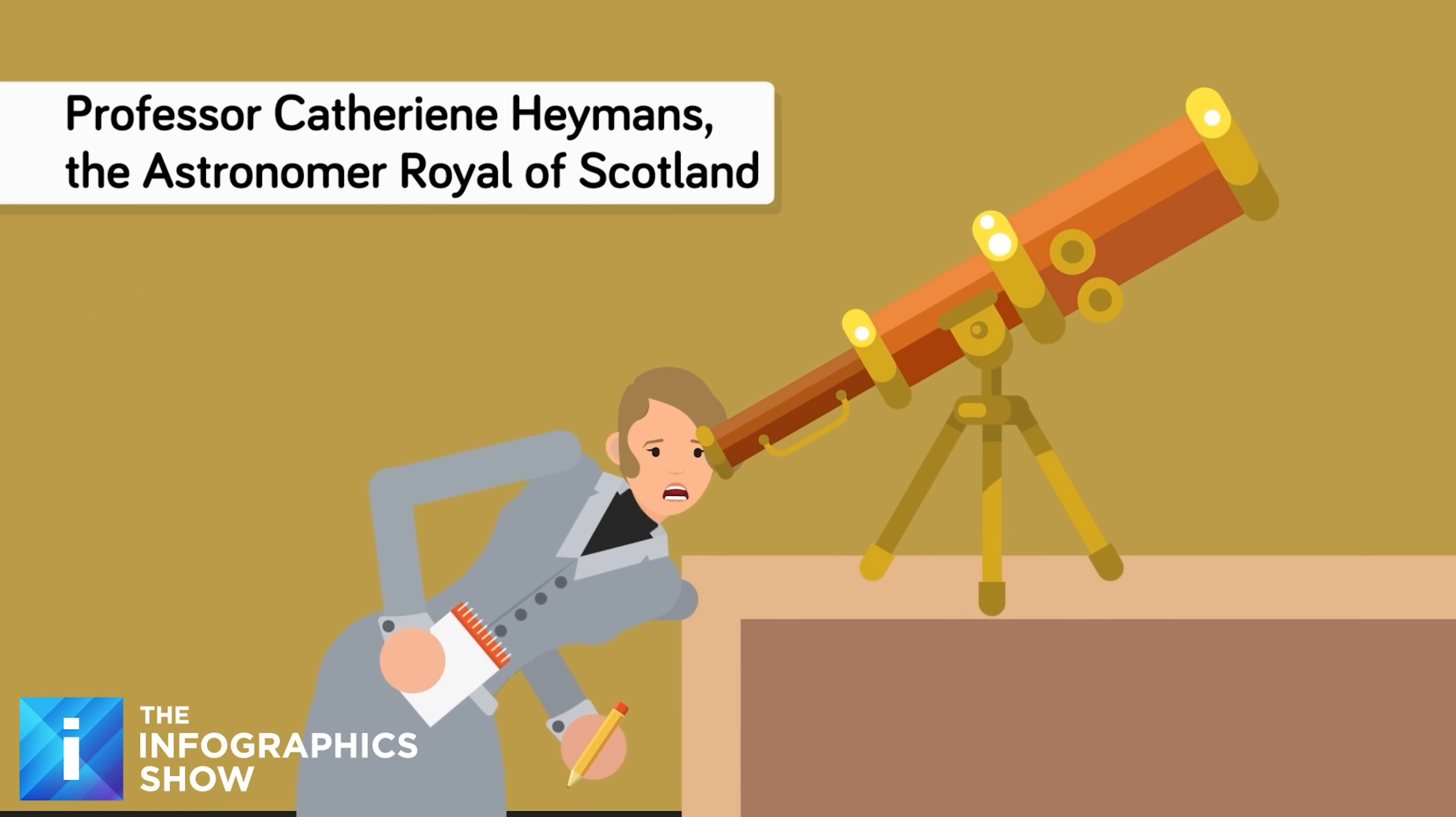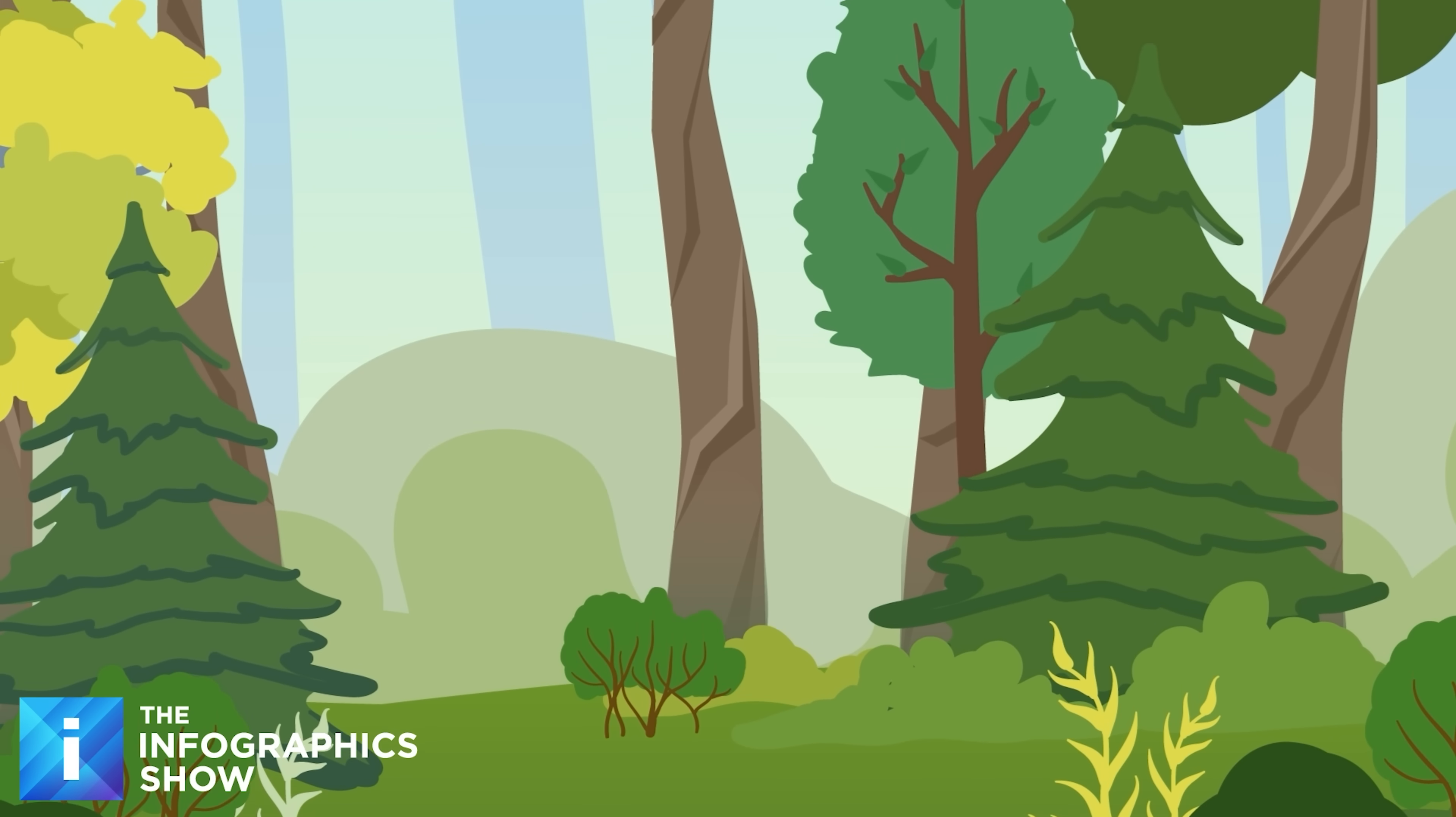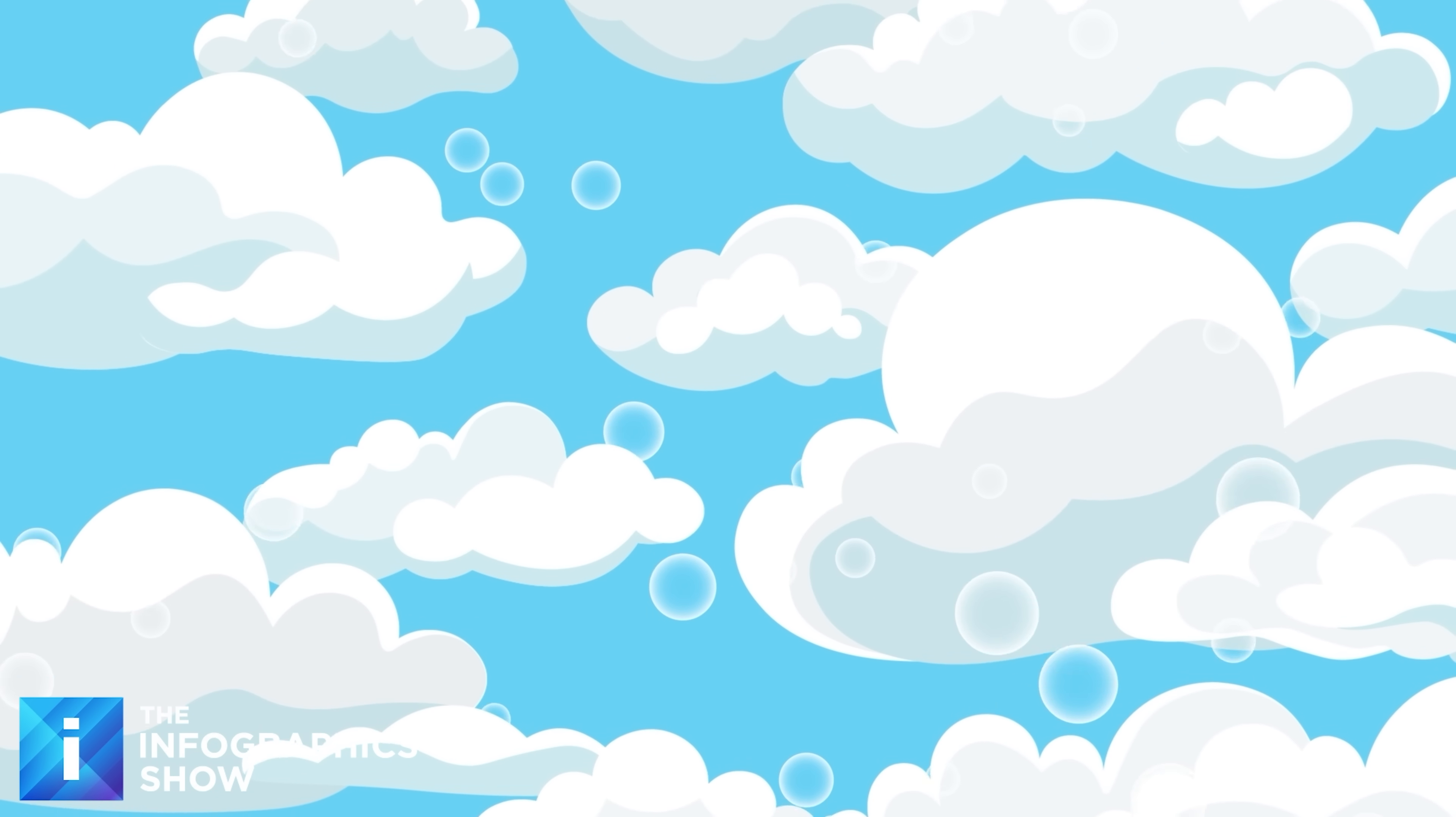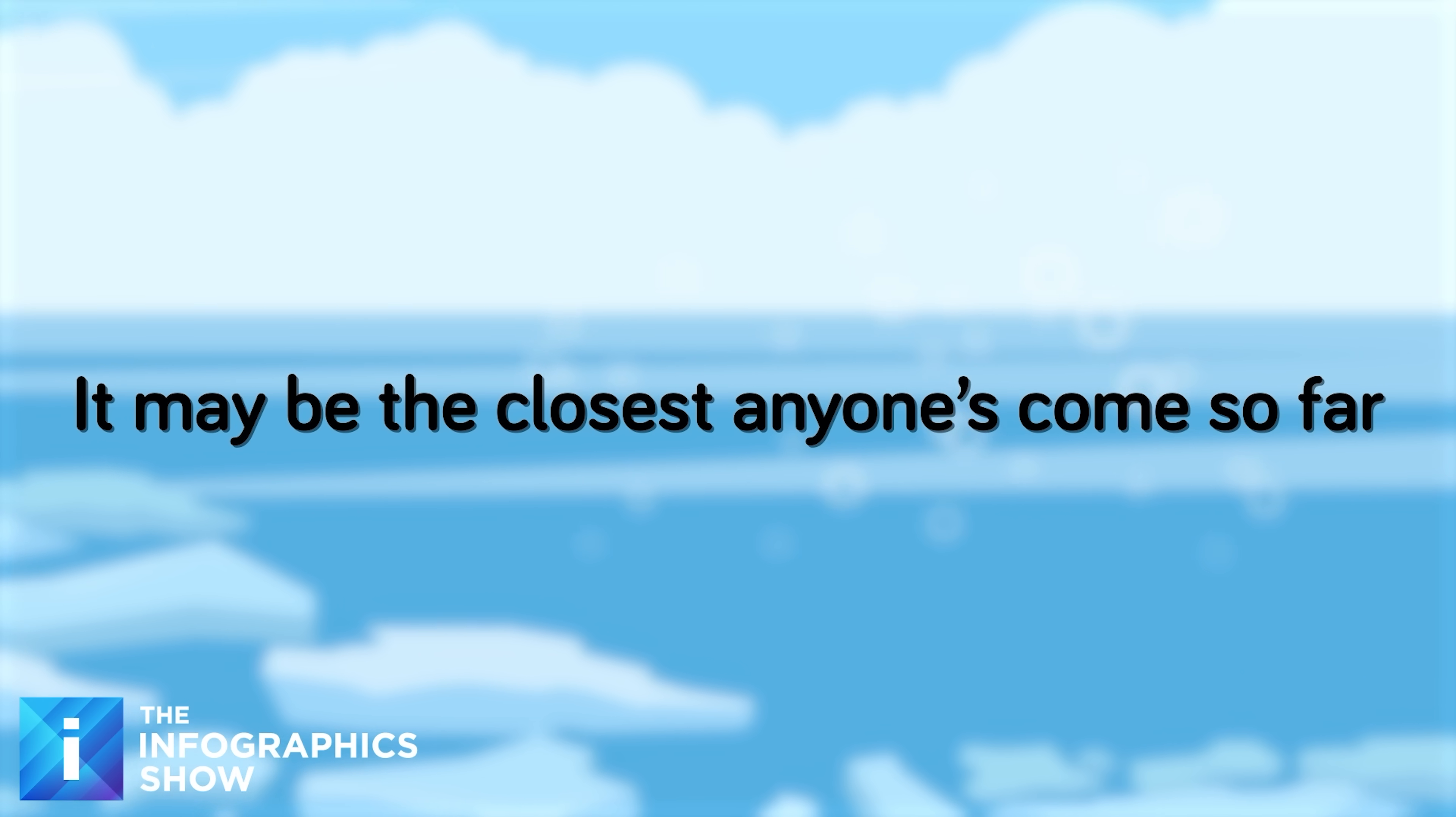Professor Catherine Haymans, the Astronomer Royal of Scotland, which is a real position, and not something from a fantasy novel, urged a more cautious approach. While on Earth this compound is created by biological components interacting, we have no way of truly understanding the chemical process on this planet hundreds of light years away. The way the planet formed could have led to chemical interactions that would create this substance even on a barren world. But it may be the closest anyone has come so far.